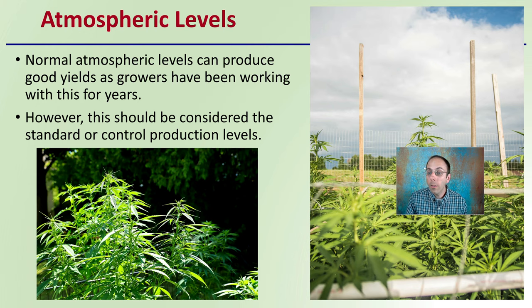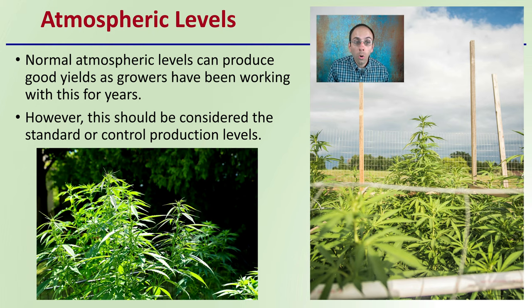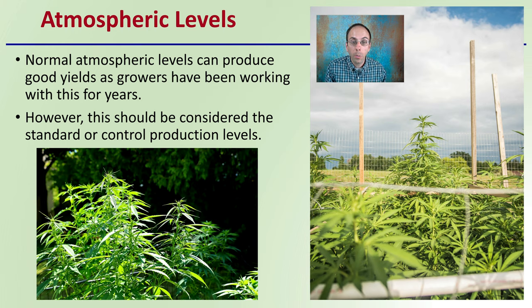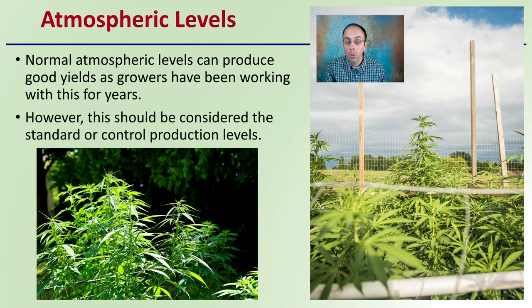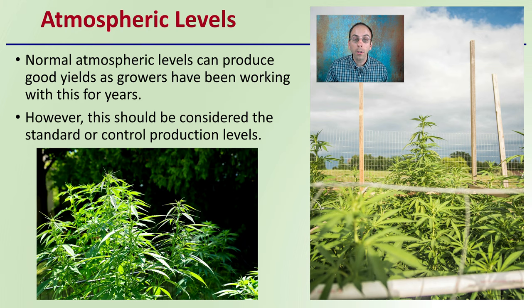These normal atmospheric levels can produce good yields, as growers have been working with this for many years. However, this should be considered the standard or control production level, because if you add carbon dioxide, you have the potential to increase your yields from here.